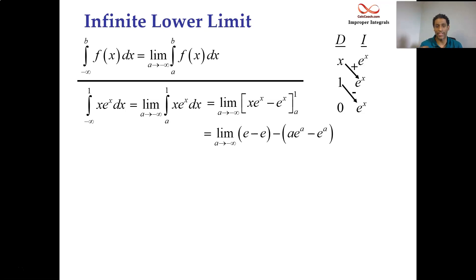We put a one in and we get e minus e. We put an a in. a e to the a minus e to the a. Let's distribute the minus and let's factor out. The e to the a gets factored out and we'll be left with one minus a. Now a is going to negative infinity. So e to the a is going to be very small. One minus a as a goes to negative infinity is going to be very big. These two things are at war with each other. One wants to be small while the other one wants to be big. This is an indeterminate form.